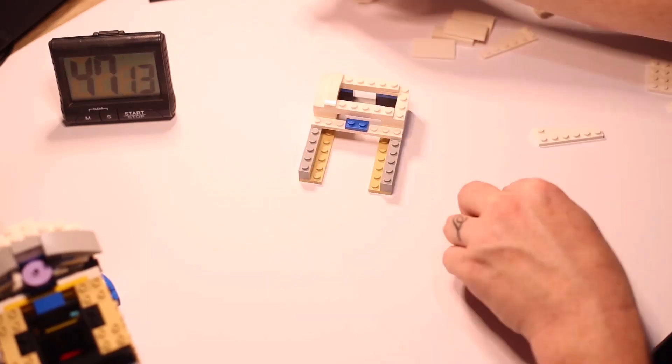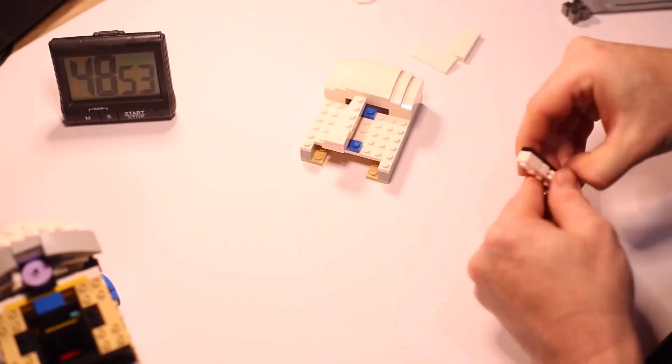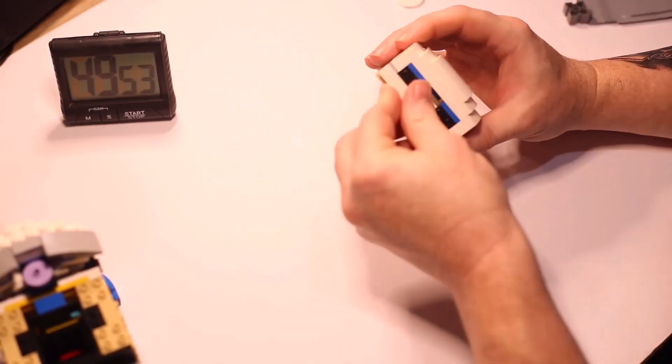So there is 328 steps to this build, and 854 pieces. And at the back of the booklet, there is a full inventory of parts.